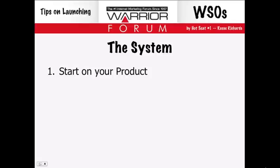Think about it like creating the index of a book, and then you'll just expand on those different chapters as you move along. Once you've thought of the product and have a cool name, go out and buy a domain name. For example, one of my products was called FB University, so I went out and bought FB-University.com.